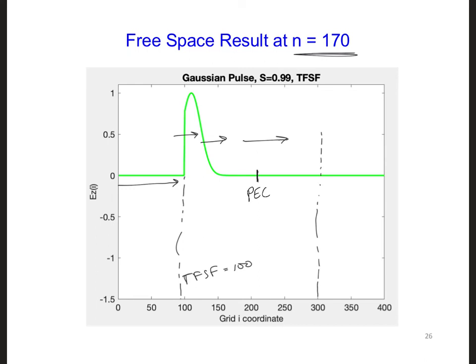To implement the PEC, you can just set ez equal to 0 at i max divided by 2 for all time steps. What do you expect to happen when we put a PEC halfway through the grid? That should have been quick.